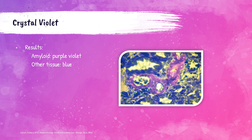When stained with crystal violet, amyloid will be a purplish-violet color while other tissue elements will be blue. The photo shown here is a kidney tissue section stained with crystal violet. The purplish-violet color visible throughout — specifically in the walls of the blood vessels within the tissue — represents the amyloid deposits.